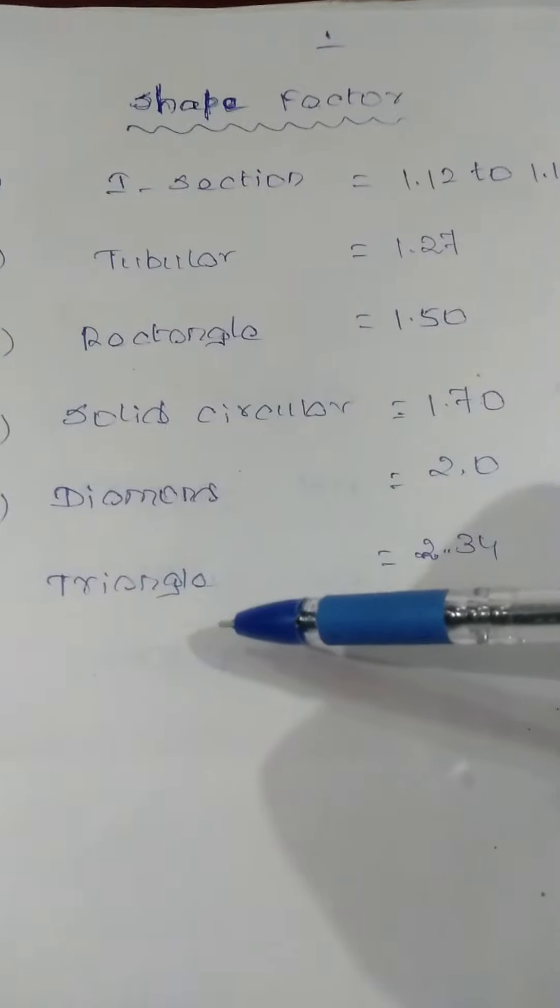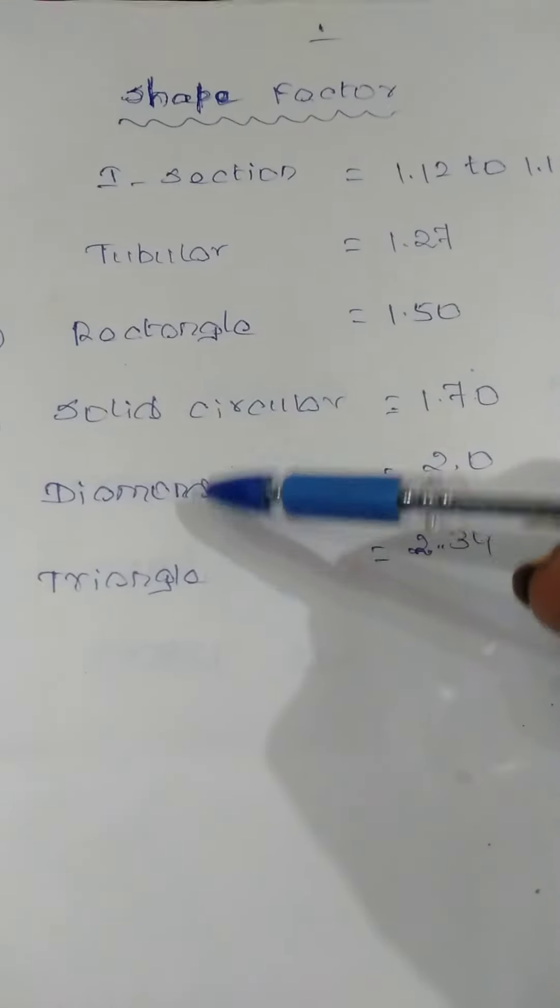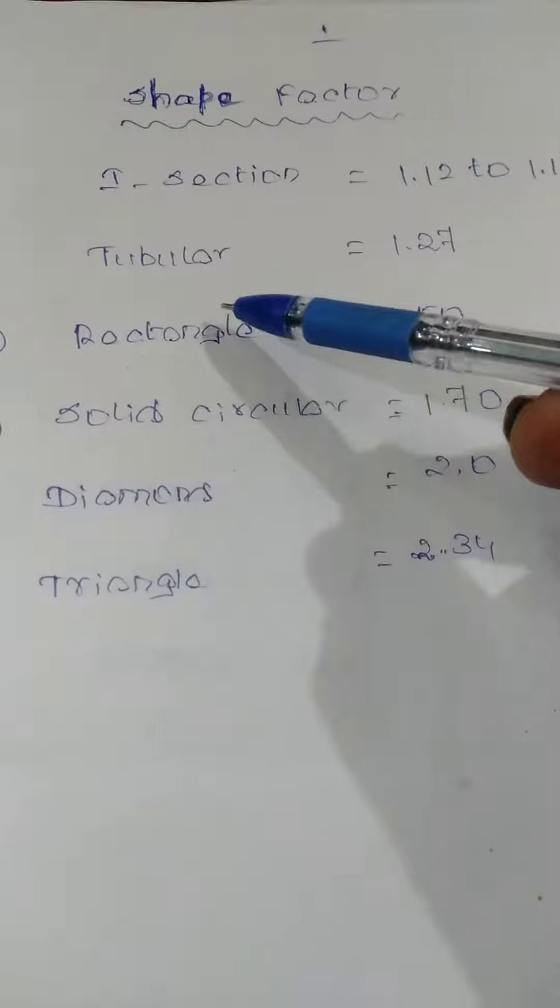If you look at the reverse, the descending order is triangle, diamond, solid circle, rectangle, tubular, I-section.